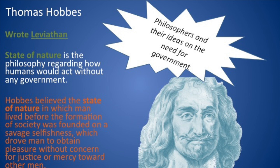One thinker behind the social contract theory is Thomas Hobbes. This philosopher wrote the Leviathan and also believed in the state of nature, which basically says man can't live without government and laws because people are so savage and selfish that they would always go about obtaining whatever they wanted without any consideration or mercy toward any other man.